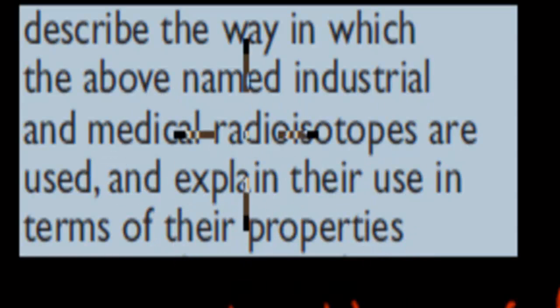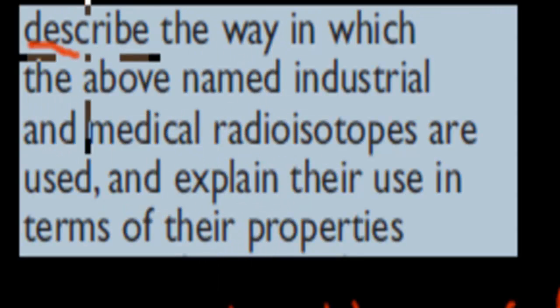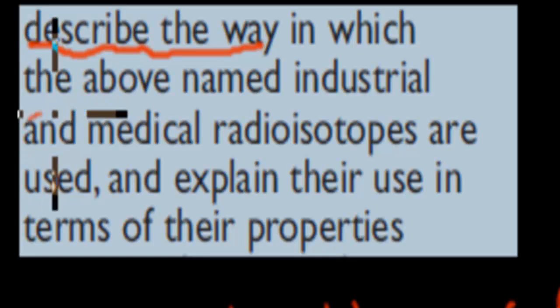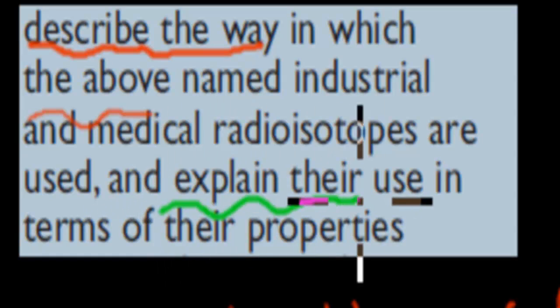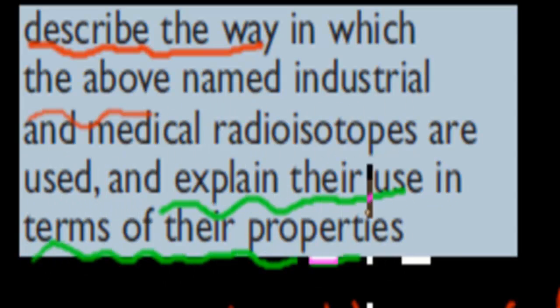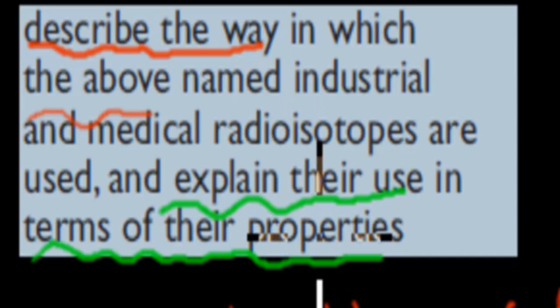So we have to do two things: describe the way these radioisotopes are used, and explain their use in terms of their properties. Why are they used? How do the properties of these different radioisotopes allow us to use them in certain ways when it comes to industrial or medical usage?